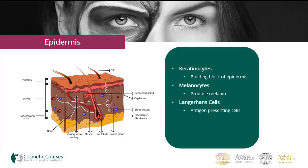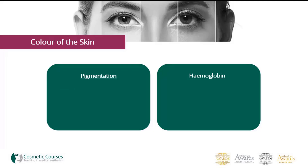Within the epidermis, you can also find sebaceous glands, sweat gland ducts, and hair. The melanocyte cells produce melanin, which is one of the factors responsible for the colour of the skin. Melanocytes darken with increased sunlight and give the holiday tan that many of us are familiar with. The amount of melanin that the melanocytes produce will affect the colour of a person's skin.